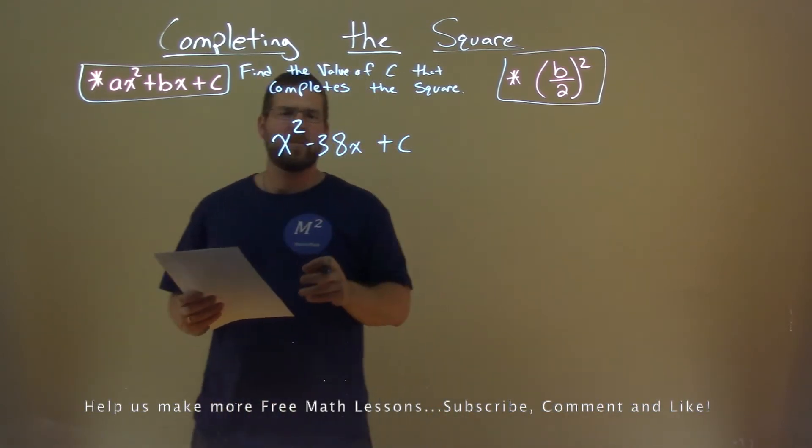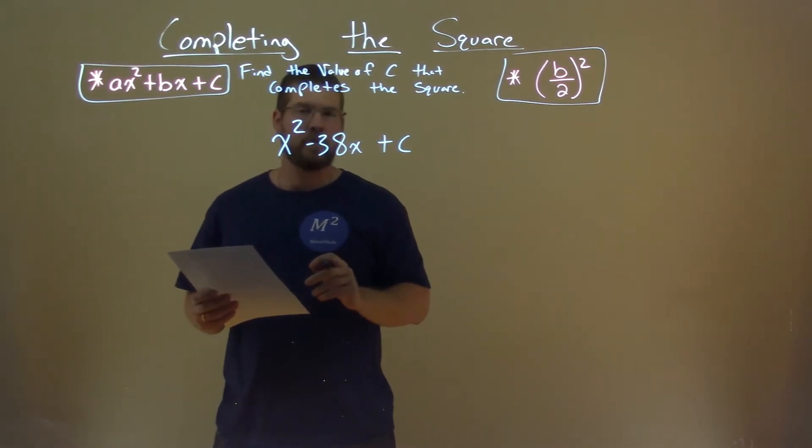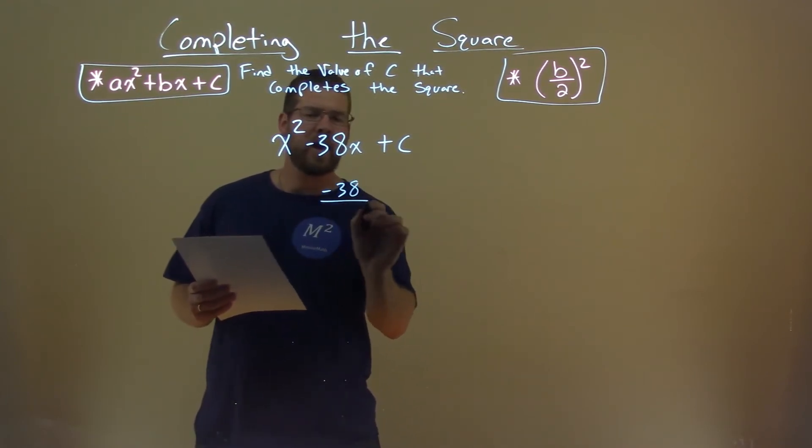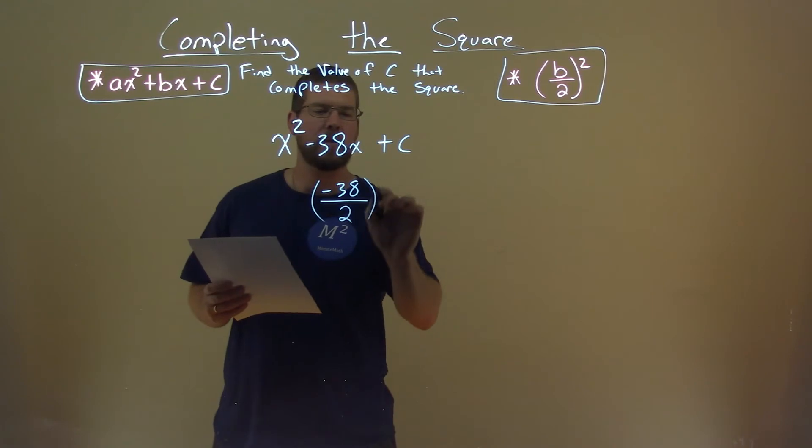Well, we have to find first our b value, which is negative 38 right here. So we take that negative 38, and we're going to divide that by 2, and we're going to square it.